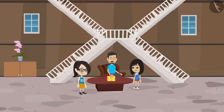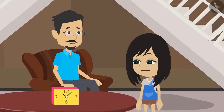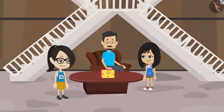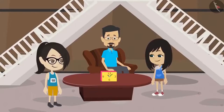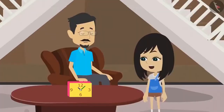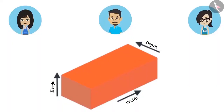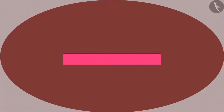We live in a 3D world. All the objects around us are 3D. What is the meaning of 3D? The meaning of 3D is three dimensional. This means that every object has three dimensions. Those are width, height and depth. Yes, we had learnt this while learning about bricks. To measure bricks, we used three dimensions. And because of these three dimensions, an object appears to be having different shapes when viewed from different sides.